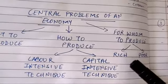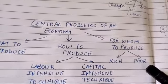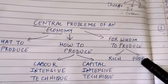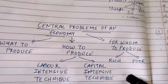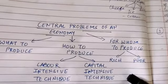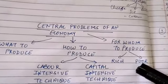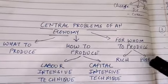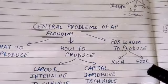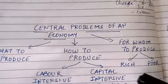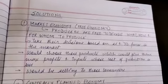'For Whom to Produce' involves the richest and the poorer sections of society. The problem arises: if the economy only focuses on the poor to promote equality, profits will be very low, leading to low investments and low GDP growth, keeping the economy backward. On the other hand, if production is only for the rich, where would the poor go? There is a problem of choice between social equality and GDP growth.